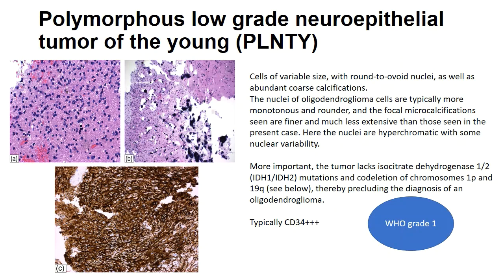PLNTY, polymorphous low-grade neuroepithelial tumor of young, is a CNS-WHO grade 1 tumor as it is a diffuse pediatric low-grade glioma. The slide shows astrocytic morphology with cells of variable shapes having round-to-ovoid morphology. There is variable degree of coarse calcification visible. This tumor is often confused with oligodendroglioma due to the glial background and round-to-ovoid cell shape. However, oligodendroglioma shows finer microcalcifications.